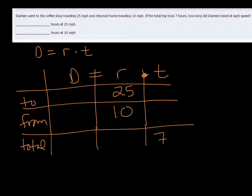So we don't know how long it took him to get there so we'll just call that T. But if you subtract T from seven, so seven minus T, that'll give us how many hours it took him to go home.